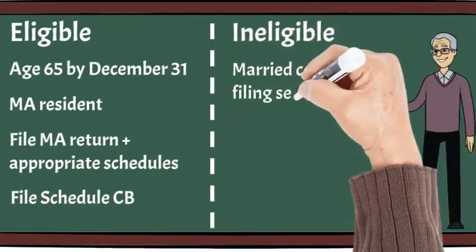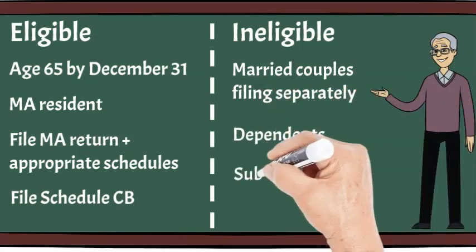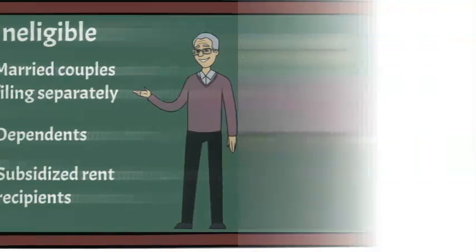Ineligible persons include married couples that file separately, dependents of other taxpayers, and subsidized rent recipients.